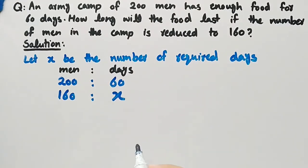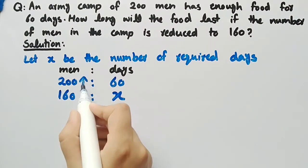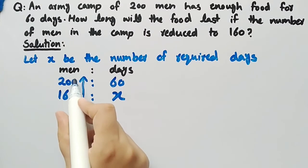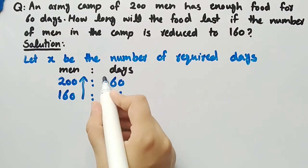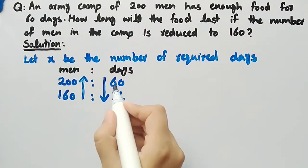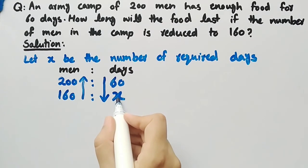Since the number of men is decreasing, we will represent this quantity by an upward arrow from the less quantity to the more quantity. And the number of days is increasing, so we will represent it by a downward arrow from the lesser quantity to the greater quantity.